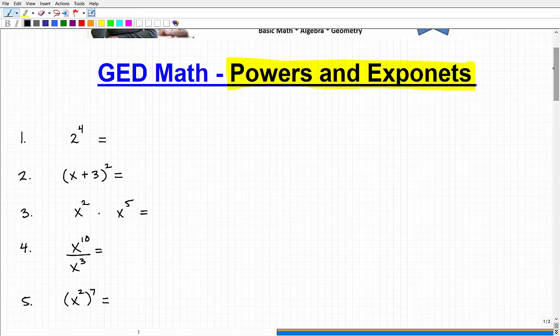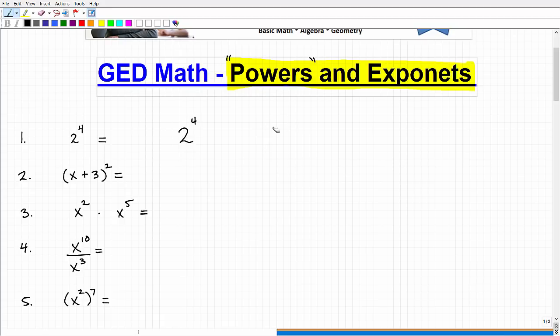First thing, let's start with problem number one. I want to get into the parts of a power and some of this terminology. So let's look at 2 to the fourth power. This bottom number is called the base, and this little number up here is called the exponent. All together, collectively, everything combined together, we call a power.